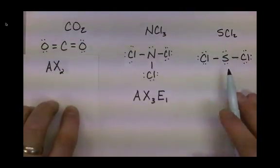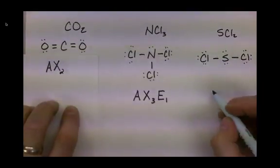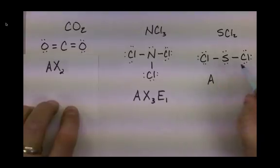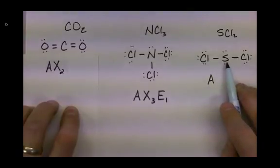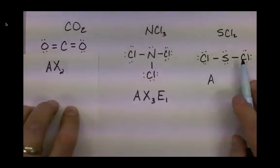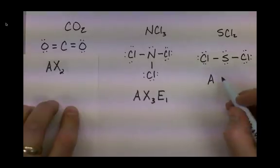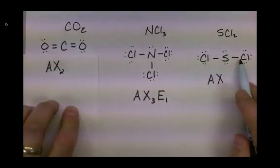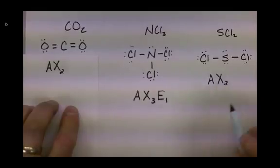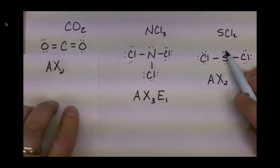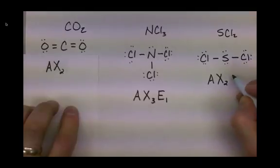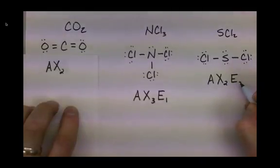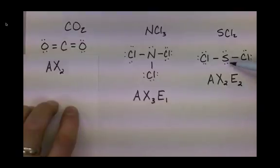In sulfur dichloride, again, the A represents the sulfur central atom. We have two chlorines — two atoms bonded to the central atom — so we represent that by X2. We have two lone pairs of electrons on that central atom, so we put E with a subscript 2 to represent that we have two lone pairs.